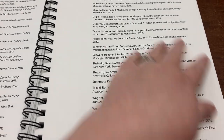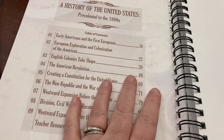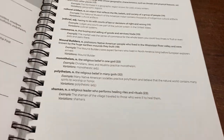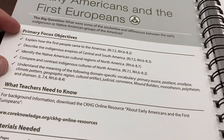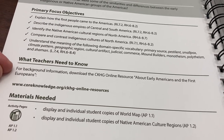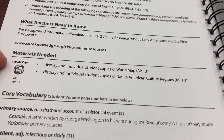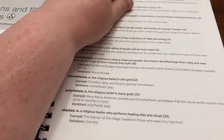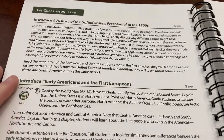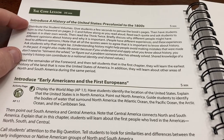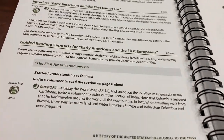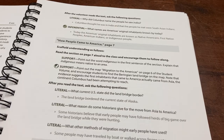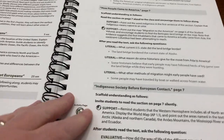Now we get into the beginning here, so this is what a chapter looks like. It tells you the big question, the primary focus objectives, and what the teacher needs to know. It lists materials needed, the core vocabulary, more core vocabulary on the side. The core lesson for this unit will take 35 minutes, and then it walks you through what you're going to do. It also has literal questions and support.